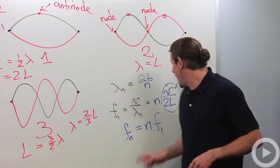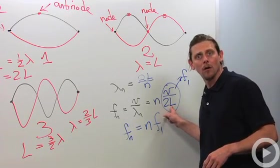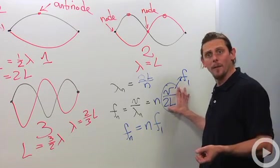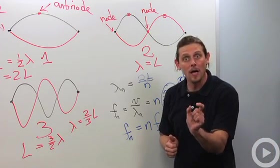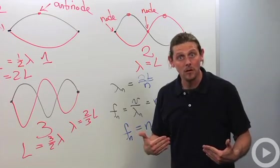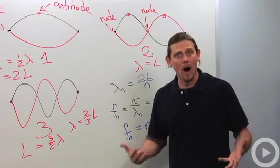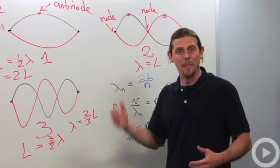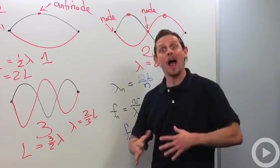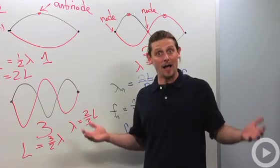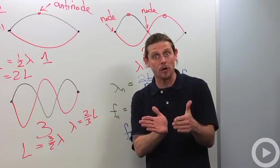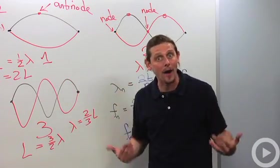What about if I make the string shorter? Well, now it's going to make this fundamental frequency bigger. So that means short equals high pitched. And we've seen that before. If you look at a bass, it has really long strings and it's really low sounding. Whereas if you look at a violin, it's got much shorter strings and it has a much higher pitch.